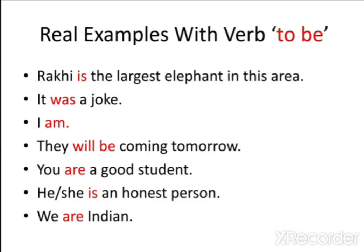Now real examples with verb 'to be': 'Rakhi is the largest elephant in this area' — here the word 'is' is a verb form from the verb 'to be'. 'It was a joke' — the word 'was' is a verb form from the verb 'to be'. 'I am' — the word 'am' is a verb form from the verb 'to be'.